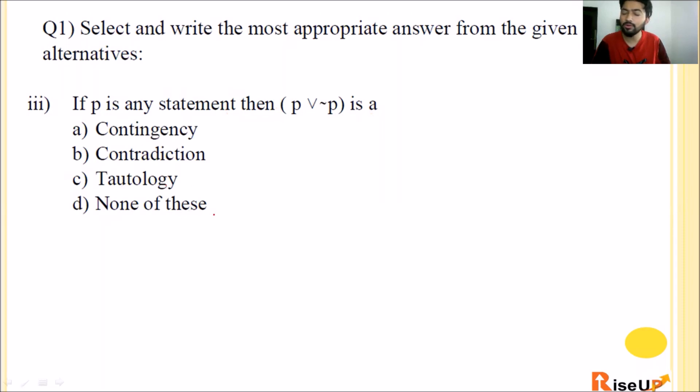If P is any statement then P or negation P is - Contingency, contradiction, tautology or none of these. P or negation P. The rule for 'or' is both statements must be false, then only it's false. But here both statements being false is not possible because we have P and negation P. If one is T, the other is F, or if one is F, the other is T. So the answer will always be T. So the correct option is C, tautology.